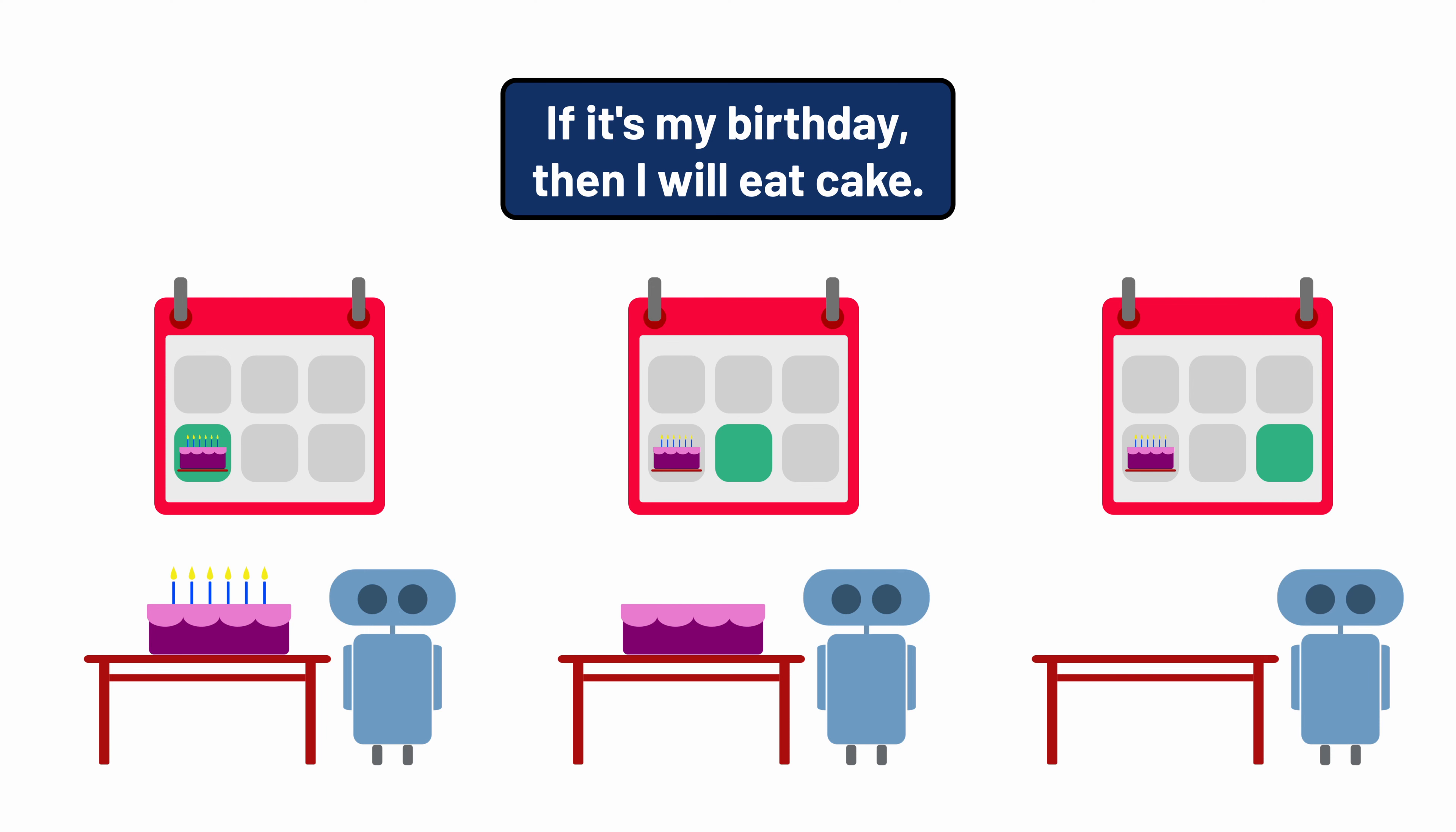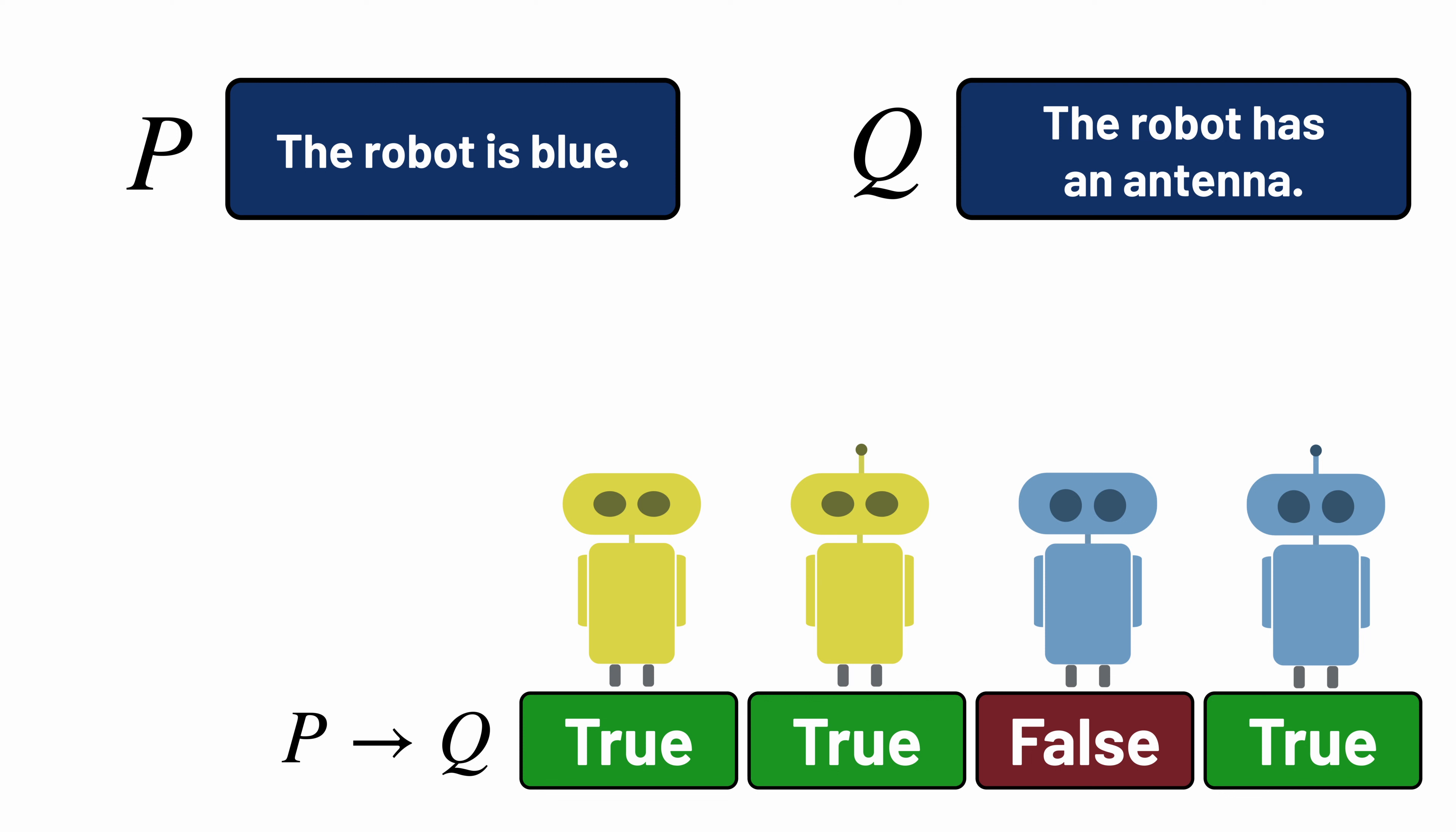The only way you wouldn't be telling the truth is if it's your birthday, but you don't eat cake. So let's go back to blue robots and antennas. The formula P implies Q is true for a blue robot with an antenna. And it's true for any robot that isn't blue. So there's another way to express this same idea too. We could equivalently say, not P or Q, which is true when the robot isn't blue, or when the robot has an antenna. In other words, these two formulas are logically equivalent to each other.